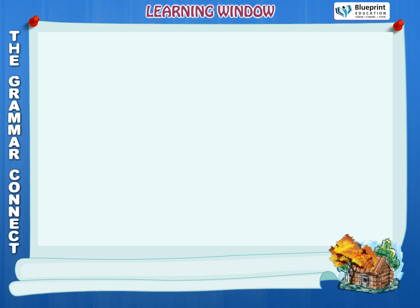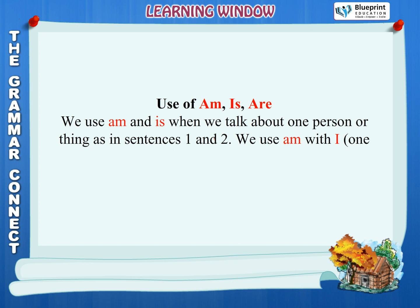Learning Window: Use of am, is, are. We use am and is when we talk about one person or thing, as in sentences one and two. We use am with I, one person, as in sentence one.